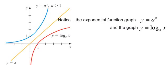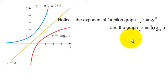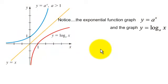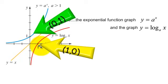Let's talk about the graphs. The exponential function y equals a to the x goes through the point (0, 1) because anything raised to the 0 is 1. The logarithmic graph y equals log base a of x goes through the point (1, 0) — because inverses swap x and y coordinates. So the point (0, 1) on the exponential becomes (1, 0) on the logarithmic graph.